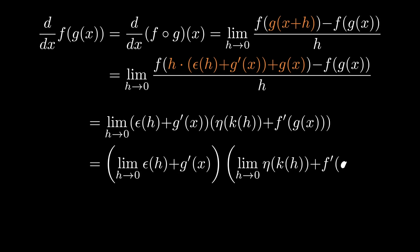Let's break that into the product of two limits. Now we convinced ourselves before that epsilon of h goes to zero as h goes to zero, so the term on the left just becomes g prime of x. By the same argument, eta of k of h goes to zero as h goes to zero, and the right hand side becomes f prime of g of x. And when those go away, we're left with the form of the chain rule that we're used to.